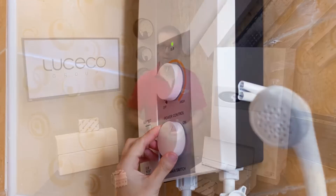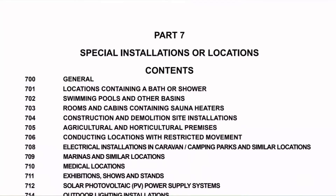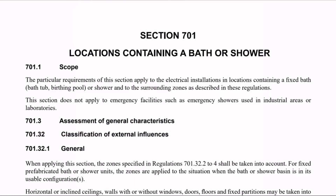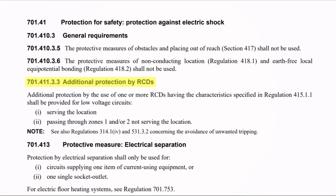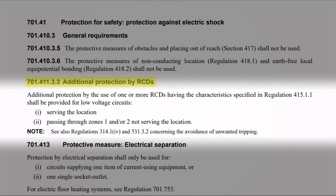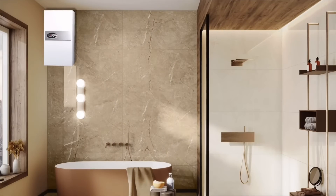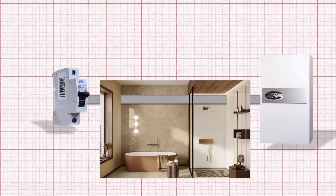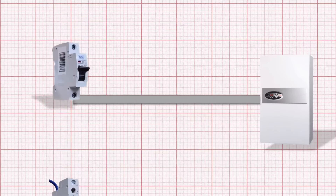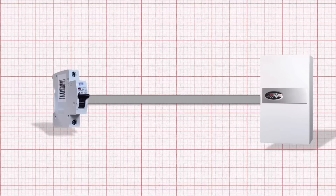We may feel inclined to use one because if we supply an electric shower in a bathroom, there is clear direction to protect that with an RCD. We find that in Part 7 on special locations, specifically Chapter 701 - all about bathrooms and shower rooms - regulation 701.411.3.3, additional protection by RCDs. This applies to low voltage circuits serving the location, such as an electric shower, or passing through zones 1 and/or 2. There is a fringe but unlikely case where a boiler could be sited in a bathroom, or its cable could pass through zone 1 or 2, which would then require an RCD.